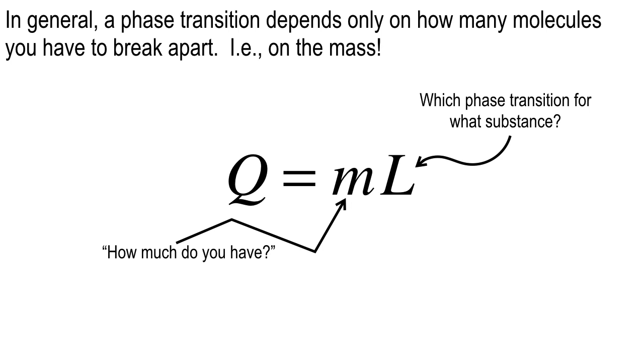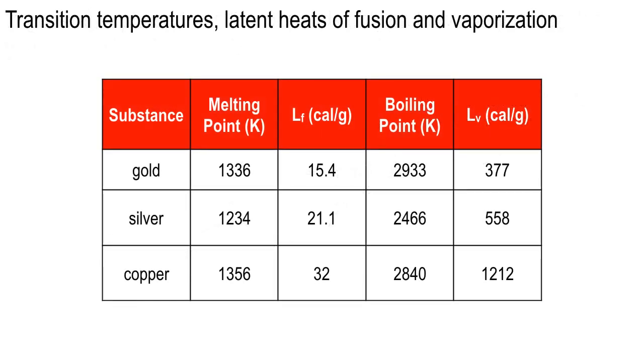On exam three, the cover page is going to have a table of specific heats and latent heats and all that stuff. So don't worry about memorizing it. Here's a table. You're going to have a clicker question about this in just a second. But let's talk about it first. Here are three metals. This is easy to look up. Here's the melting point. And here's the boiling point.